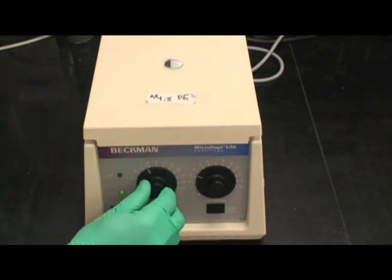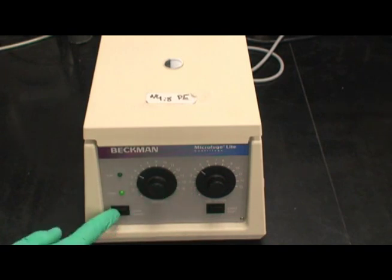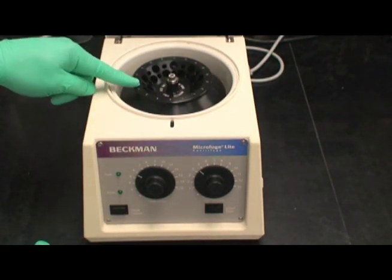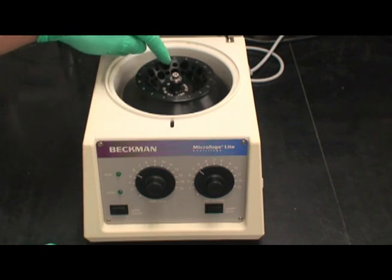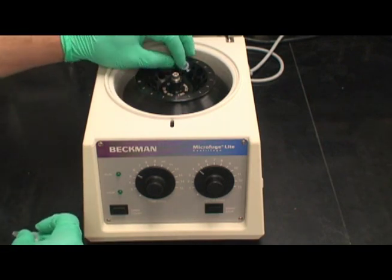This is another example of a microfuge device. Similarly, it has knobs that adjust the time and speed of the centrifugation. A small button in the bottom left opens the lid. This particular rotor has differently sized slots, allowing for tubes of various sizes to be spun at the same time.